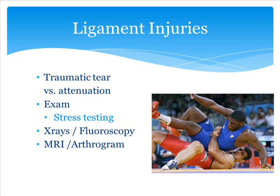When we think about ligament injuries, we think about the traumatic acute injuries and those that may be an attenuation of a ligament versus a complete rupture. The physical exam is very important. In particular, we'll go over some specific stress tests that will help us determine what type of injury there is. When we're evaluating athletes, we need to look at x-rays and other imaging modalities like fluoroscopy, and occasionally MRI or arthrograms to help us in diagnosing these type of injuries.